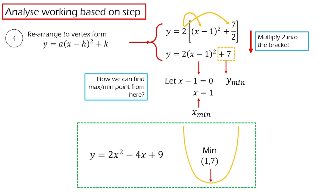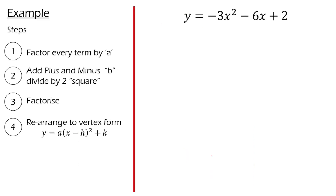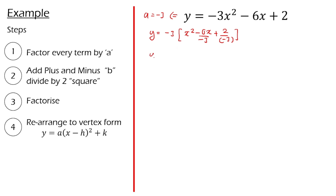I think we are ready now. Let's try an example together: find the maximum point for y = -3x² - 6x + 2. The first step is to factor every term by a. Our a for this equation is -3. Factoring gives us y = -3(x² - 6x/(-3) + 2/(-3)), which simplifies to y = -3(x² + 2x - 2/3).